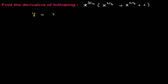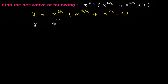Let y equal x to the power 3/4 times the quantity x to the power 2/3 plus x to the power 1/3 plus 1. Now let me multiply x to the power 3/4 into the whole bracket. When the bases are the same, powers are added: 3/4 plus 2/3, and then 3/4 plus 1/3, and then x to the power 3/4 times 1 gives x to the power 3/4.